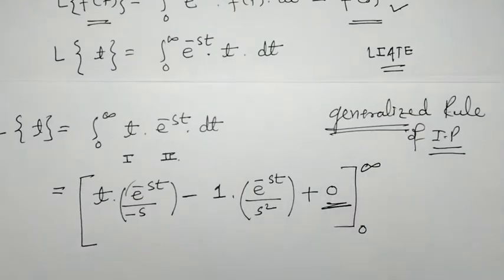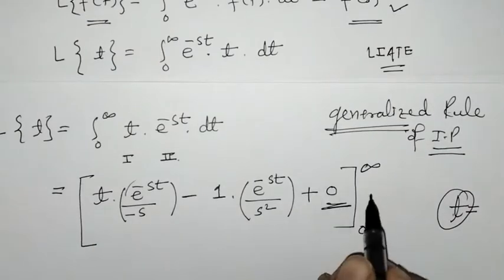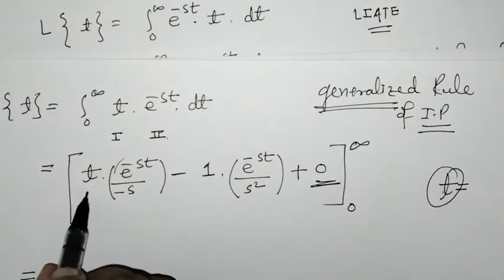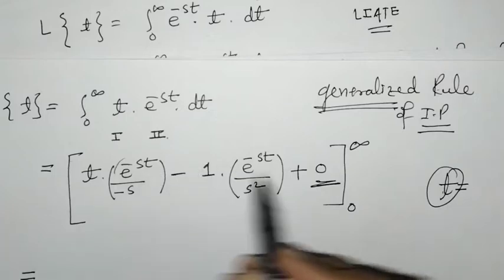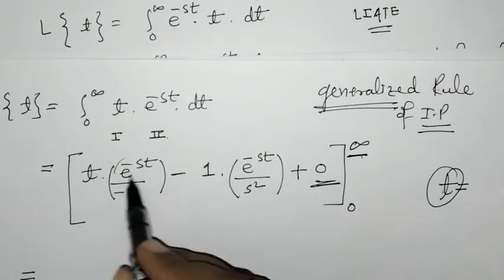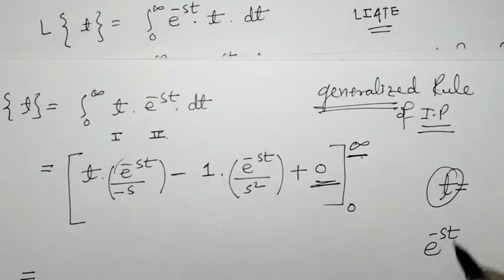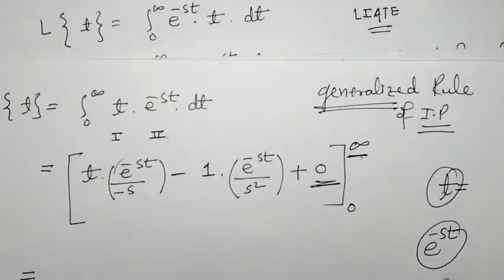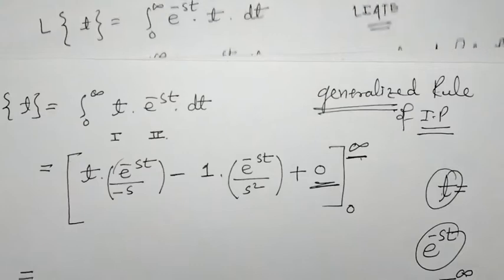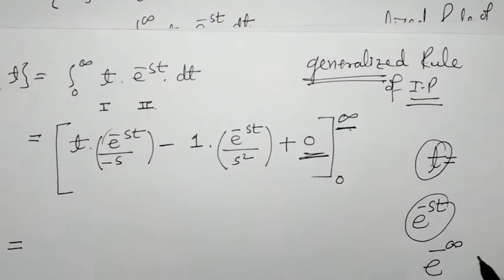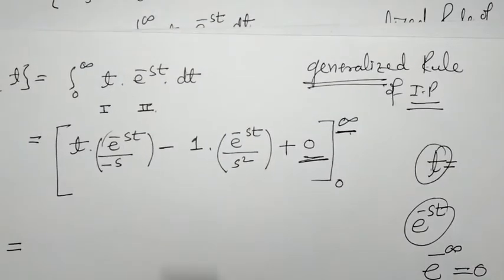Now we have to put in the limits — t from 0 to infinity. When we put in the upper limit, we have the e raised to minus st term. As t goes to infinity, this becomes e raised to minus infinity, which equals 0. So all terms at the upper limit evaluate to 0.